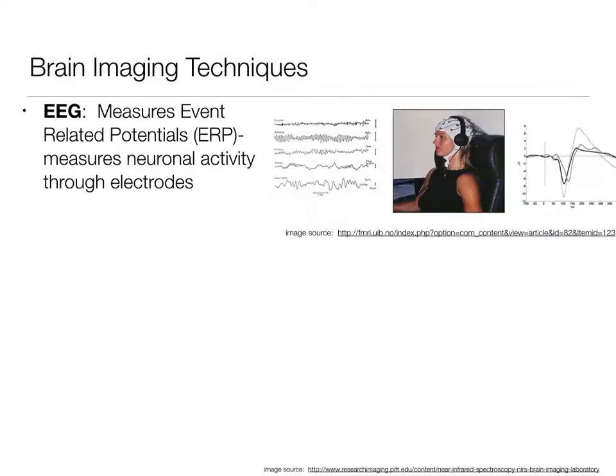The other thing we look at with EEGs are ERPs, which are event-related potentials. That measures neuronal activity through the electrodes. So most of the time when we're using EEG data, what we're actually using is this ERP. The image of what an ERP looks like is the image on the right of her picture. We're measuring and getting information about the electric activity.